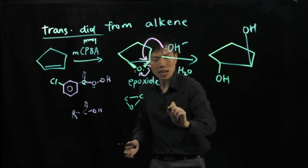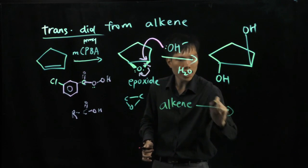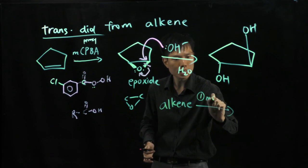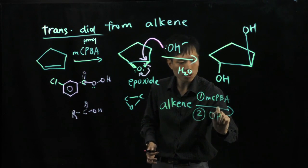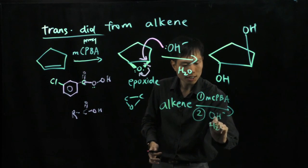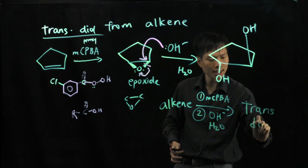So once again, to summarize, when you have an alkene, you just need to add step one, MCPBA, step two, you add hydroxide with some water, you get a transdiol.